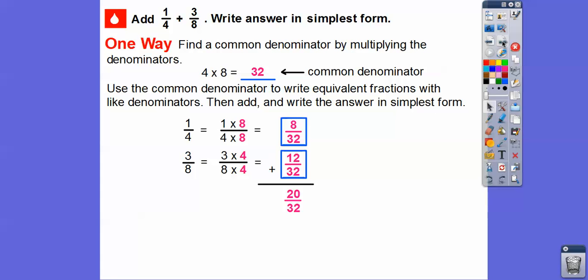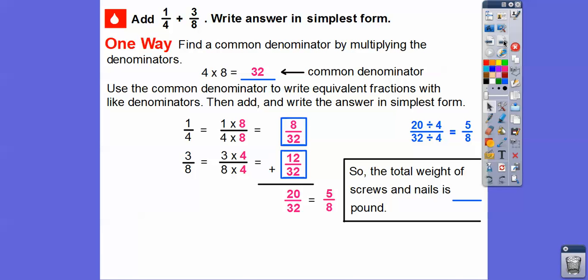We will reduce 20 over 32 by dividing them both by four. 20 divided by four is five, and 32 divided by four is eight. So this will reduce to five-eighths. And that's going to be our simplest form. So there are five-eighths of a pound of screws and nails.